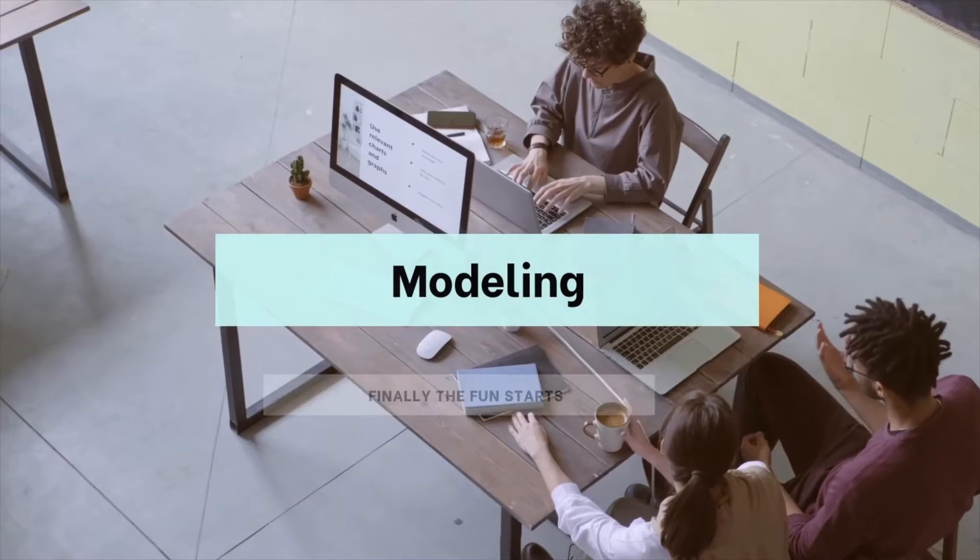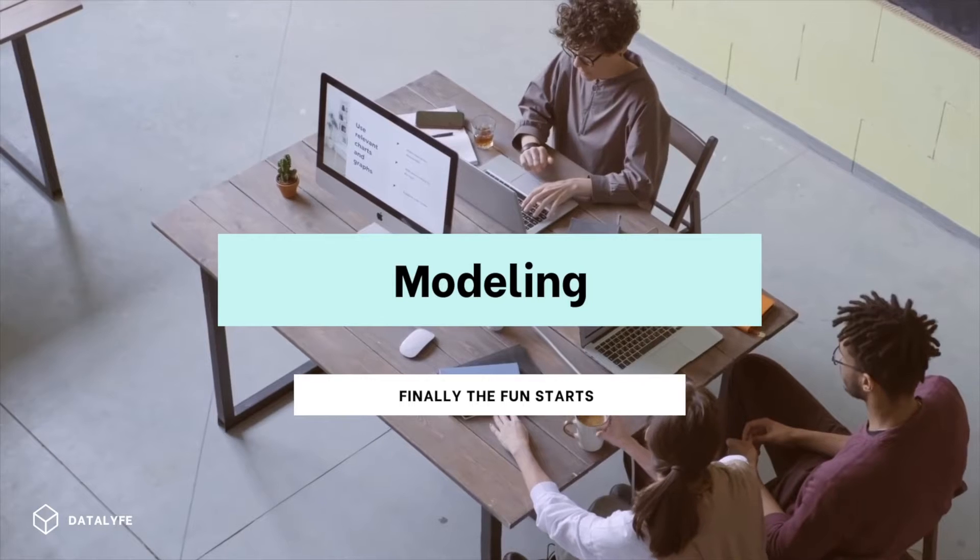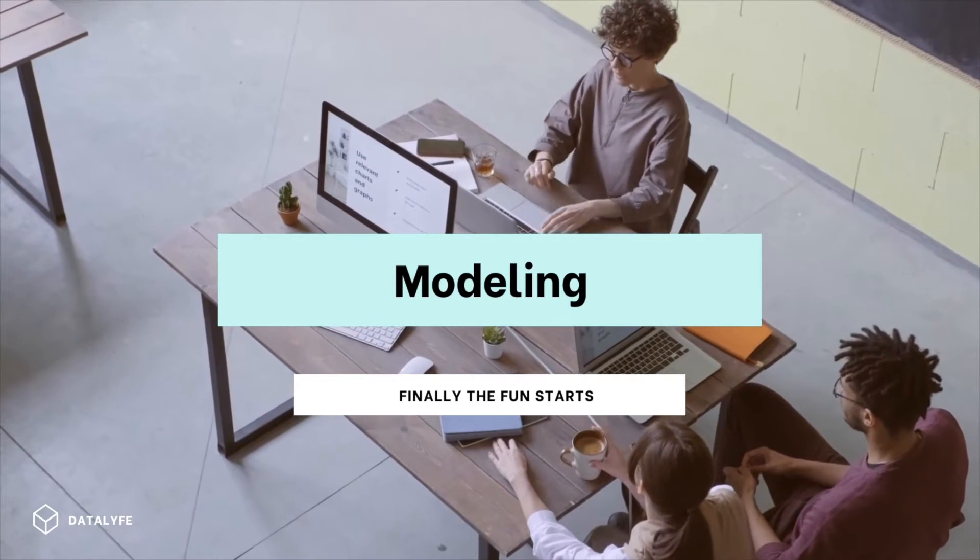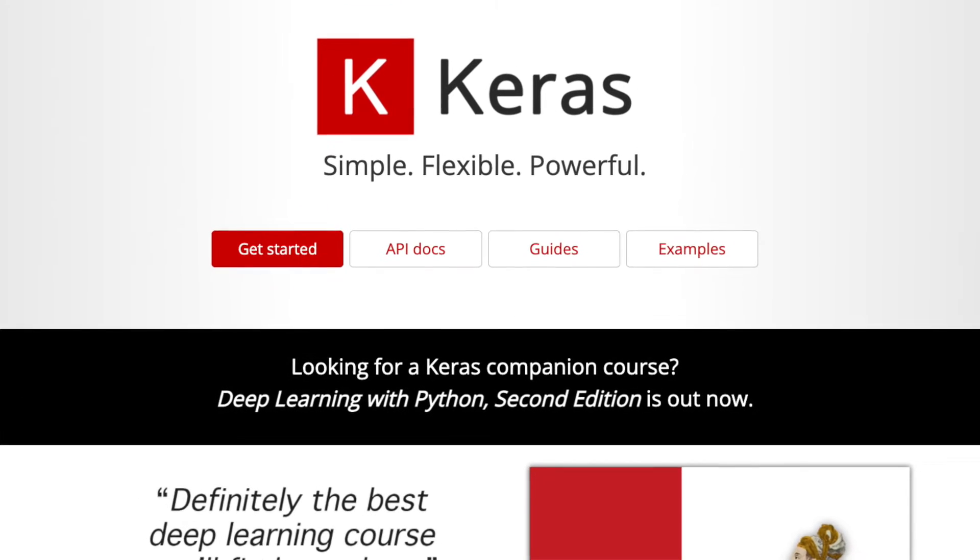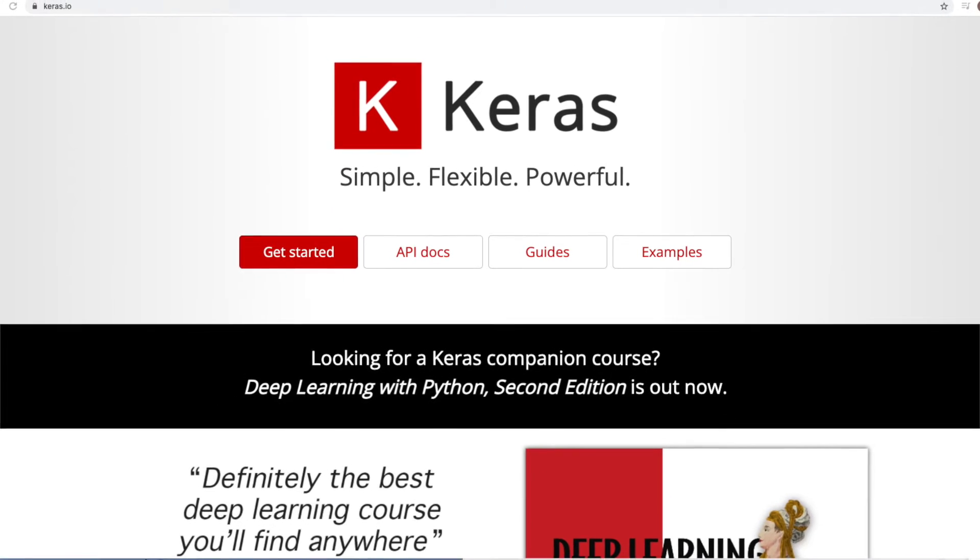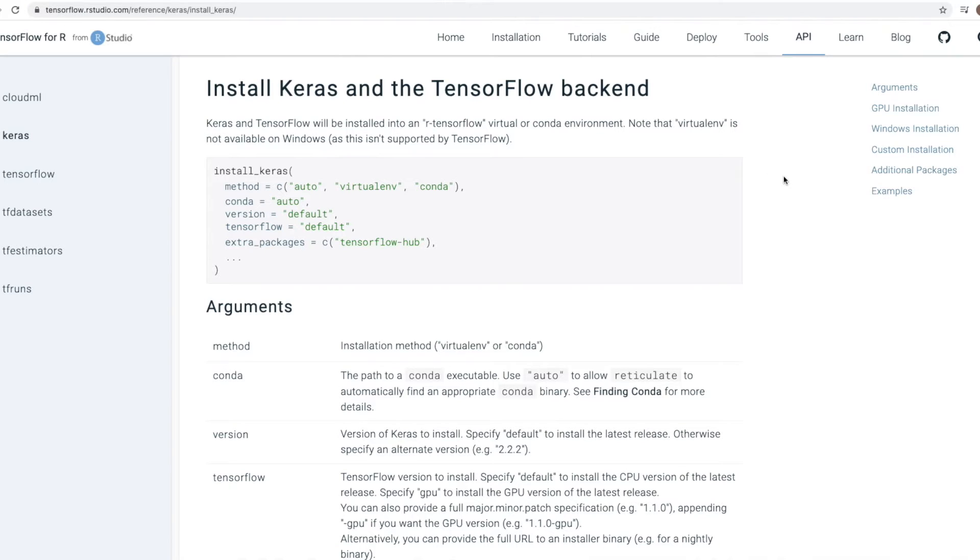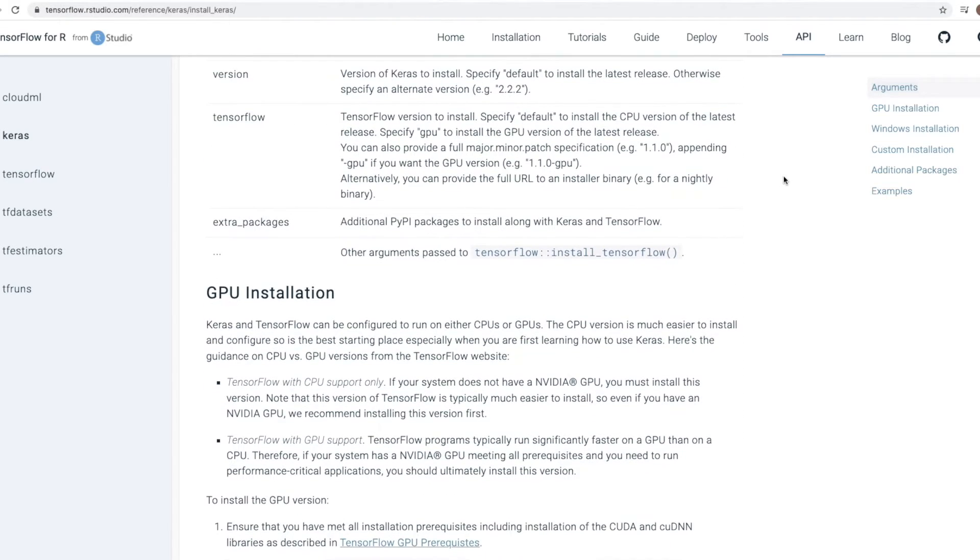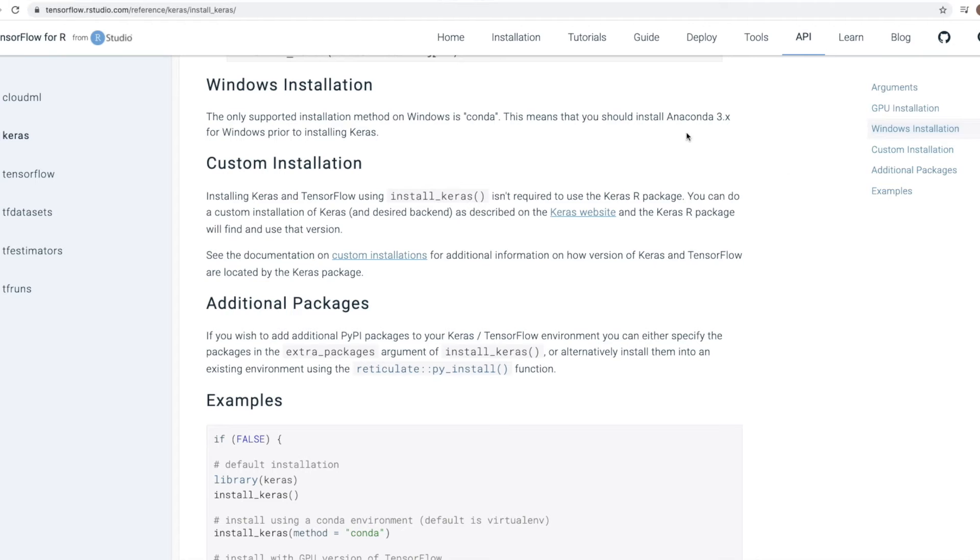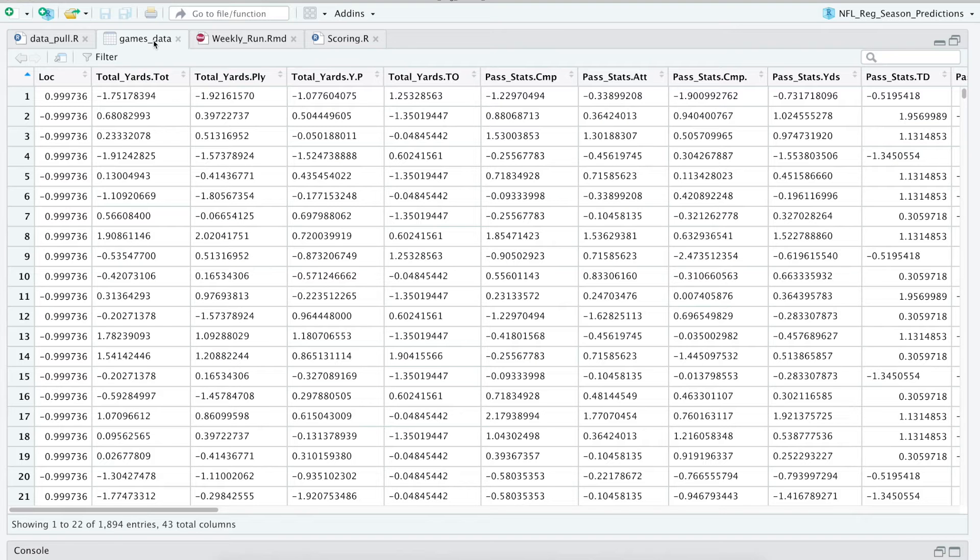Now onto the modeling. We're going to create a neural network using Keras to predict the scores of the NFL games. First you'll have to download the Keras package for R that will install the TensorFlow and Keras backend if you don't already have it installed. The documentation can be found online at Keras.com.